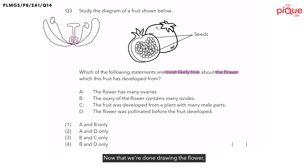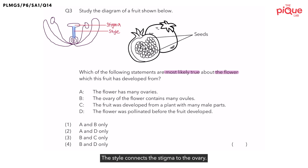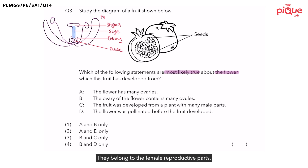Now that we are done drawing the flower, let us label the different parts of the flower, starting with this part here on the top. What is the name of this part? This part is known as the stigma. And what is the name of this part that is holding the stigma up? This part is known as the style. And the style connects the stigma to the ovary. And what can be found inside the ovary? The ovule. The stigma, style, ovary, and ovule belong to the female reproductive parts of the flower. So we will label female on the top.